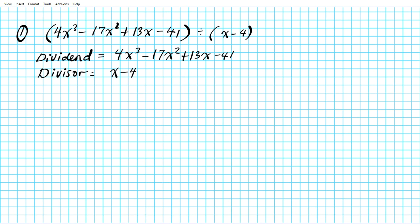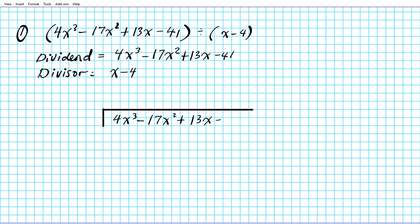Let's go ahead and divide these two polynomials using the long division method. We put up our division bar with the dividend inside: 4x³ minus 17x² plus 13x minus 41, and we're dividing by x minus 4. Since our divisor is a binomial, we're going to be grouping terms in twos.